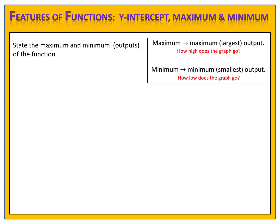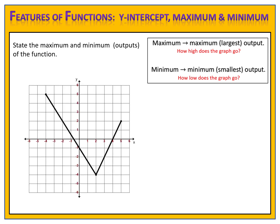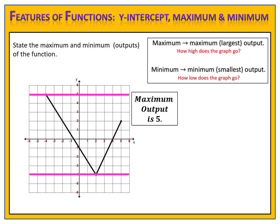Let's take a look at an example. We want to state the maximum and minimum outputs of the function. For the maximum, we look for the highest point on the graph and look at the y-value at that point. The y-value is 5, so the maximum output is 5. For the minimum, we look at the lowest point on the graph — that y-value is negative 4, so the minimum output is negative 4. This function has a maximum output of 5 and a minimum output of negative 4.